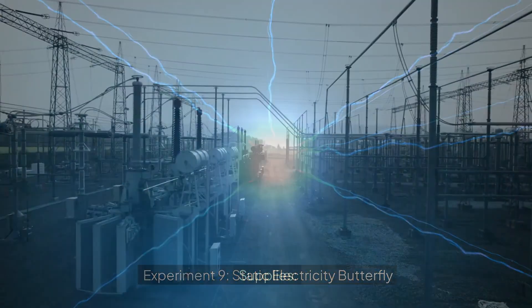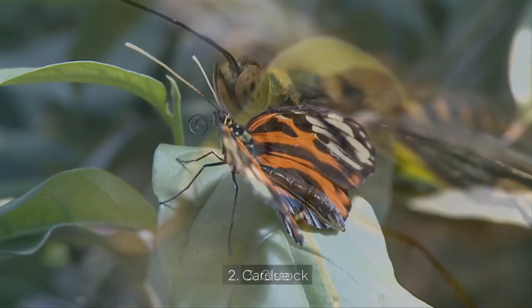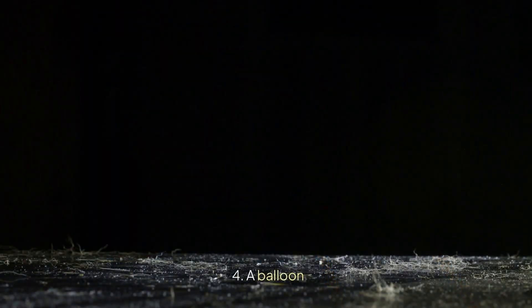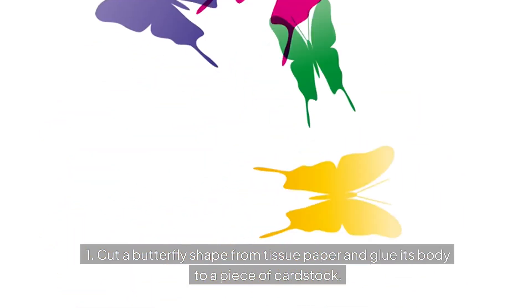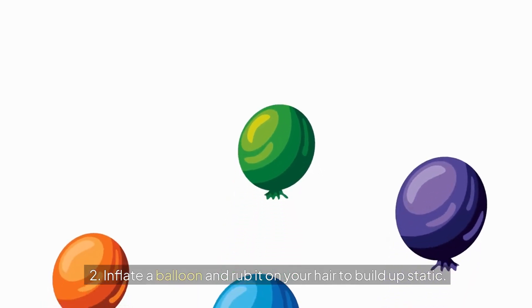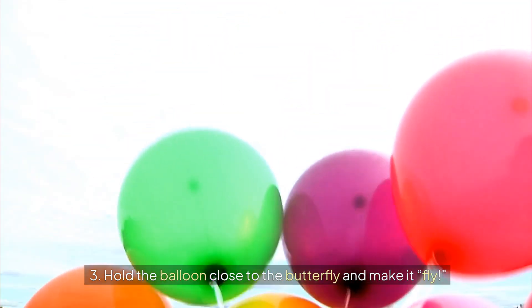Experiment 9: Static electricity butterfly. Supplies: tissue paper, cardstock, glue, and a balloon. Steps: Cut a butterfly shape from tissue paper and glue its body to a piece of cardstock. Inflate a balloon and rub it on your hair to build up static. Hold the balloon close to the butterfly and make it fly.